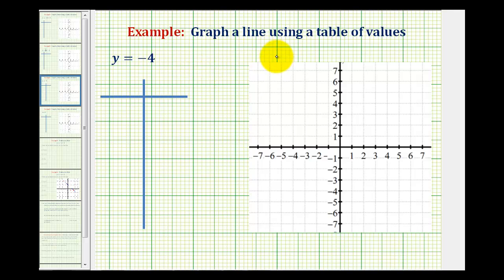Sometimes there's confusion about how to graph a line containing one variable. For example, here we want to graph the line y equals negative 4.